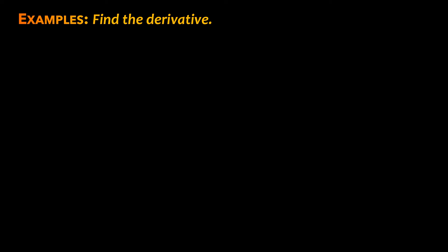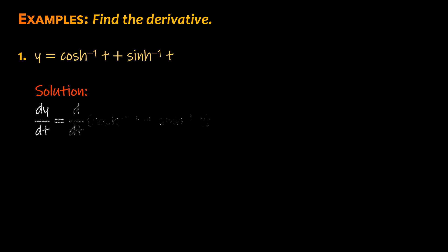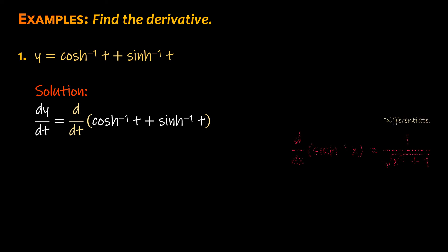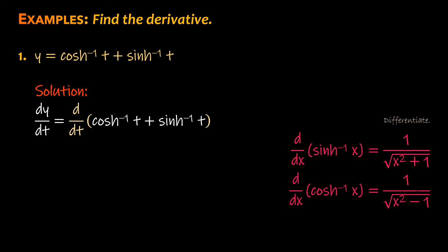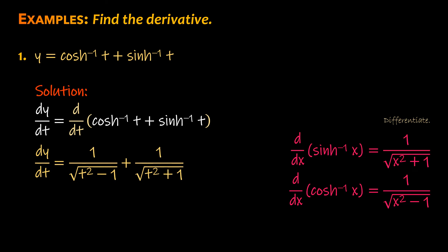Examples. Find the derivative. Number 1: y equals the inverse hyperbolic cosine of t plus the inverse hyperbolic sine of t. Solution: dy/dt is the derivative of y with respect to t. Differentiate using inverse hyperbolic function rules. Hence, dy/dt equals 1 over the square root of quantity t squared minus 1, plus 1 over the square root of t squared plus 1.